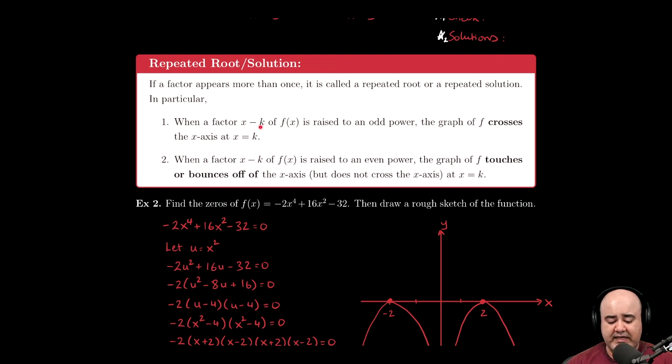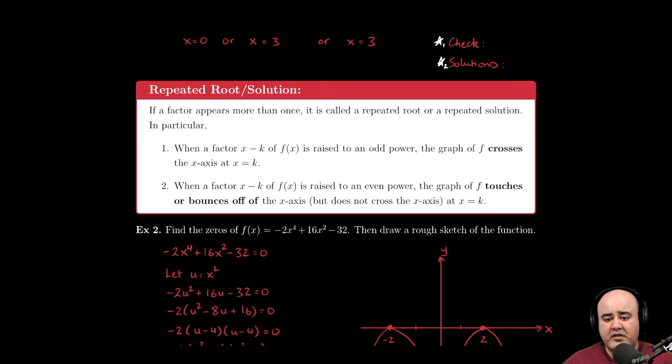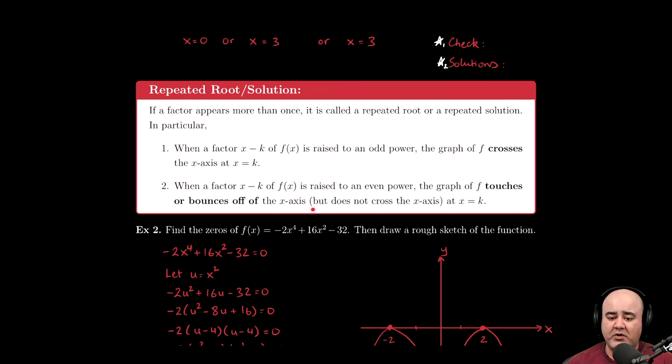When a factor of (x - k) is raised to an odd power - maybe instead of (x - 3) squared, it had appeared three times so it would be (x - 3)³ - whenever we have an odd power, and it doesn't have to be three, it could be just to the first power or third, fifth, or seventh power, in all those cases when the power is odd, the graph crosses the x-axis. By contrast, if the power is even, the graph touches or bounces off the x-axis, so it'll go back where it came from and won't cross over.